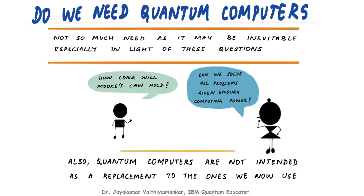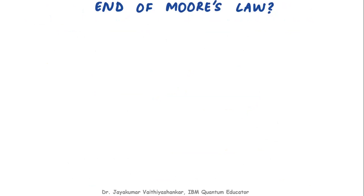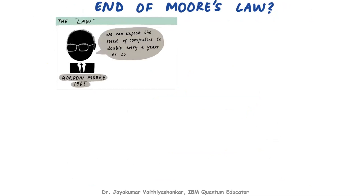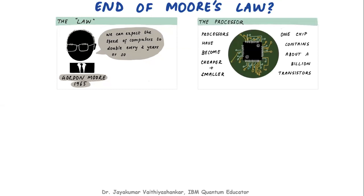We have to discuss Moore's law because this is the primary factor behind building quantum computers — it represents the necessity of moving beyond classical computing. The law, stated in 1965 and proposed by Gordon Moore, says we can expect the speed of computers to double every two years or so. Processors are becoming cheaper and smaller, and even a single chip can contain about a billion transistors. Every two years we try to make the chip cheaper and smaller, embedding billions of transistors in it.